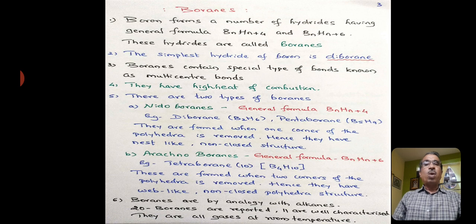There are two types of boranes. One is called neidoboranes and another one is called arachnoboranes. Neidoboranes have a general formula BnHn plus 4. Examples are diborane, B2H6, and pentaborane, B5H9. These boranes are found when one corner of the polyhedra is removed. Hence, they have nest-like, non-closed structures.